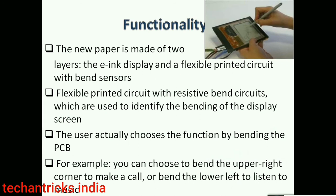The new e-paper is made up of two layers: the e-ink display layer and a flexible printed circuit with a bend sensor. The printed circuit with bend sensor uses circuitry on a flexible printed circuit, which helps form the bendable display. The main component is sensors which allow the screen to bend.